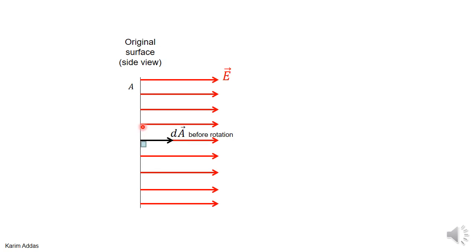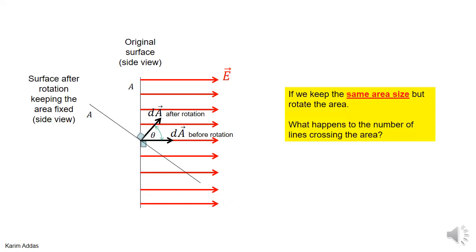If you look at the problem from a side view, the surface appears as a line, and the normal to the surface is the area vector — it's perpendicular to the surface. Originally, the electric field is perpendicular to the surface. When you rotate the surface, the area vector rotates because it always stays perpendicular to the surface, and some electric field lines that were going through the surface before are no longer going through it, so we expect a decrease in the electric flux.